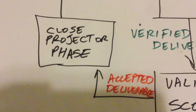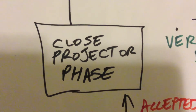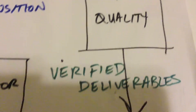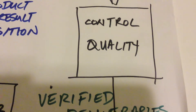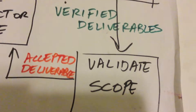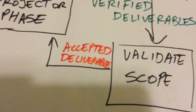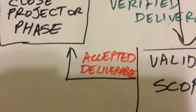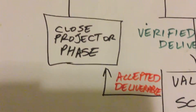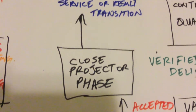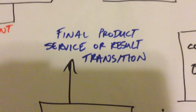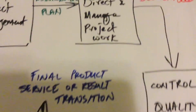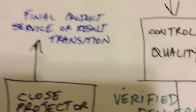This accepted deliverable becomes an input to the closed project or phase process. So deliverables become verified deliverables if they pass the test in control quality, and that becomes an input to validate scope. If your customer accepts that deliverable, we call it an accepted deliverable — that is documented proof that the deliverable has been accepted. Accepted deliverables become an input to closed project or phase, and that is where we get final product, service, or result transition, as well as a final report that documents how that deliverable ended up being accepted.